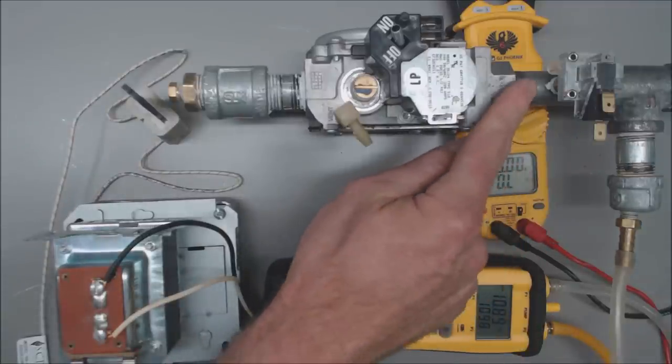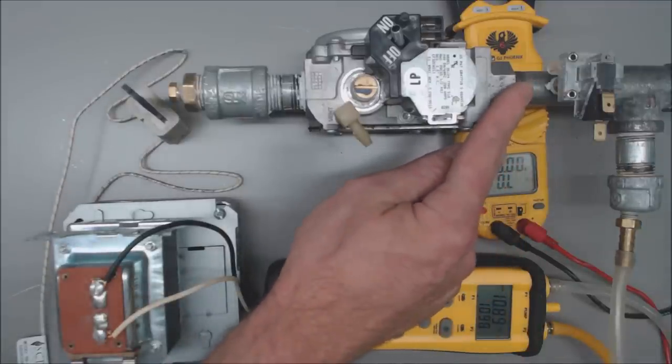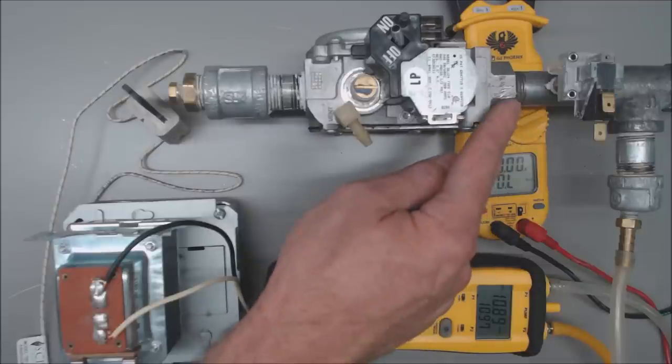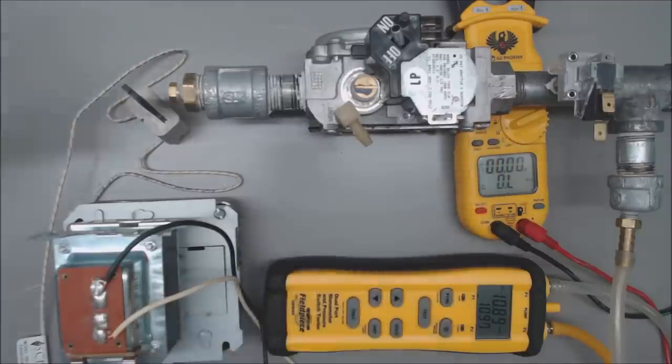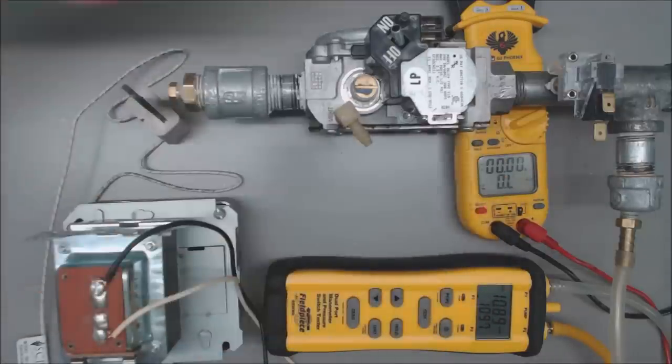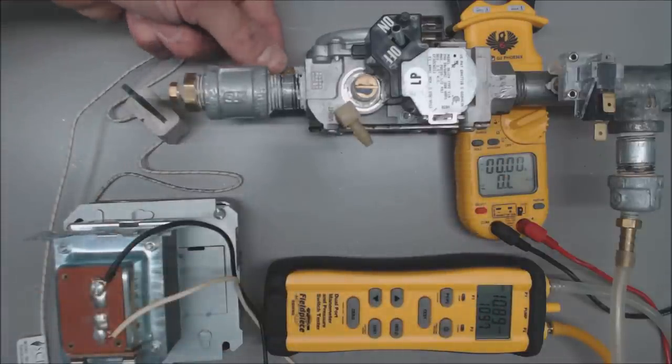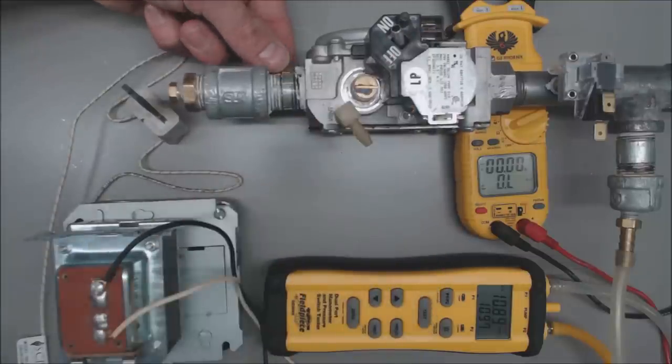So obviously if you don't have any gas pressure coming in that will be a problem right away, and then you just want to go ahead and find where the gas valve is turned off at. But in this instance we have gas pressure coming in, so we definitely want to check on this side, see what's going on when we apply 24 volts to this.